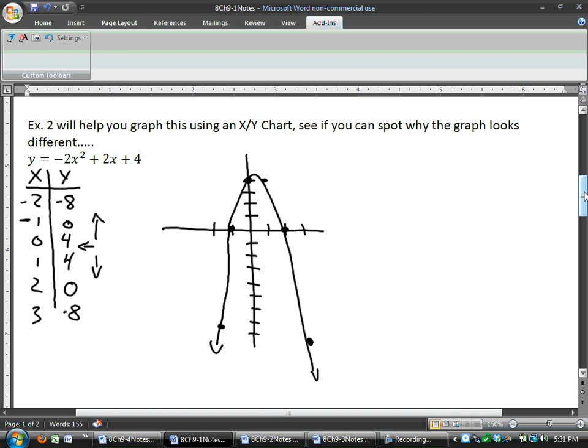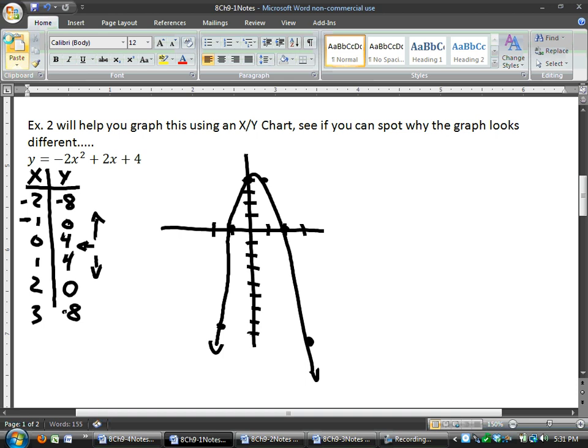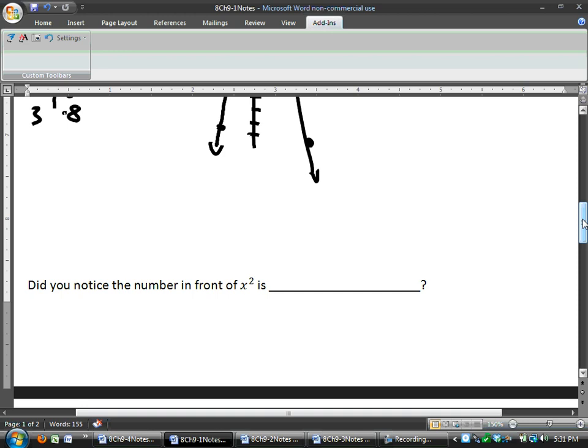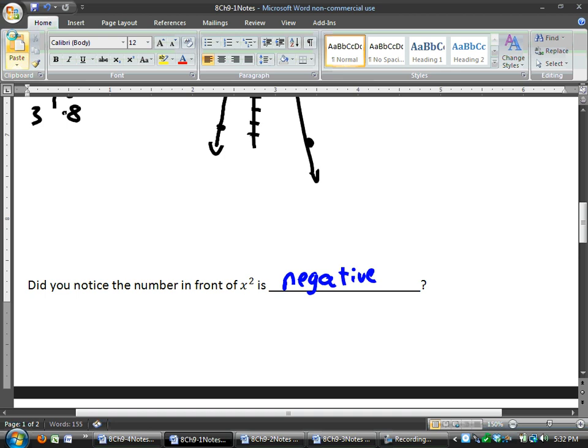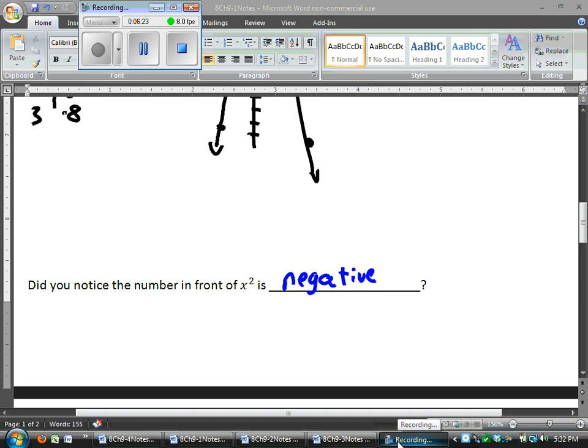So, we see a difference here between example 1 and example 2. You should notice that example 1 opens up like a U. Example 2 opens down like an N. And if we look down here at the bottom of the paper, it gave us a little hint as to why. For example 2, the number in front or A value for X squared is negative. Anytime that A value in your quadratic equation is negative, it's going to open down. Positive, it's going to open up. So that's just a nice easy way to check and make sure you're doing stuff right.